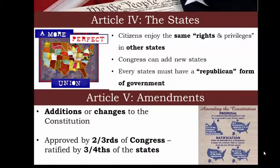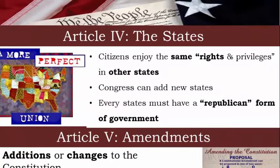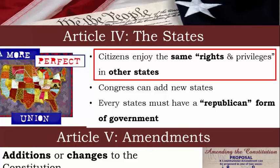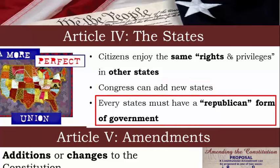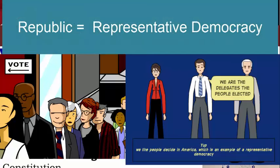Article 4 was about the relationship between the national government and the states. It basically said citizens shall enjoy the same rights and privileges in other states — so if I go from Florida to Georgia, I get the same rights Georgia residents have. It also said Congress would add new states, and that every state must have a republican form of government. Republican here does not mean the Republican Party — it means a representative democracy, where you elect people who do the governing for you.